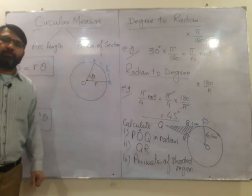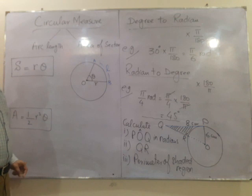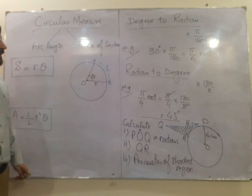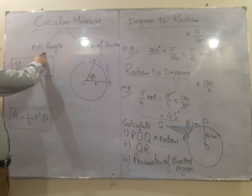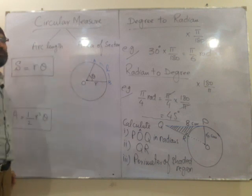Welcome back students. Today's session is regarding circular measures. In circular measures we are dealing with two main things. Number one is the arc length and number two is the area of the sector.